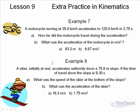And the last one is the skier initially at rest accelerates uniformly down a slope. The time of travel is 9.3 seconds. What's the speed? What's the acceleration? Of course, you're given initially at rest, vi is zero. The distance that she travels is 75.8. The time of travel is 9.3. The final velocity is one of those fourth unknowns. And also, what's the acceleration? That can be a fourth unknown. You have to pick the right equation in order to do these.